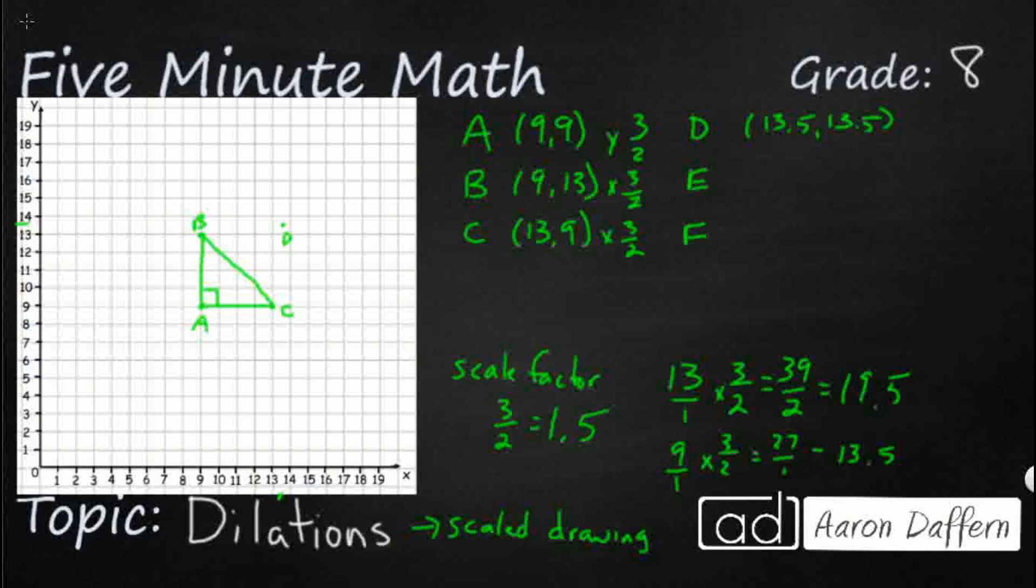So now I'm going to do my E. So remember my 9 turns into 13.5. And my 13 is going to turn into 19.5. So once again, it's not going to be on any of the lines. So I'm staying on my 13.5 on my X, but I'm almost off the chart here. So that's going to be my E right there.